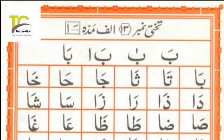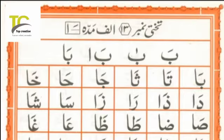یہ ایک نئی چیز ہے آپ لوگوں کے لئے، تو بہت اچھے طریقے سے سمجھئے گا۔ حروف مدہ کیا ہوتا ہے؟ جب ہم قرآن پڑھتے ہیں تو حروف مدہ تین قسم کے ہمارے پاس موجود ہوتے ہیں: ایک الف مدہ، دوسرا واؤ مدہ، اور تیسرا یا مدہ۔ ان کے ناموں سے لگ رہا ہے کہ الف مدہ الف سے بنے گا، واؤ مدہ واؤ سے بنے گا، اور یا مدہ یا سے بنے گا۔